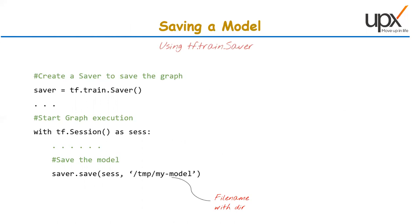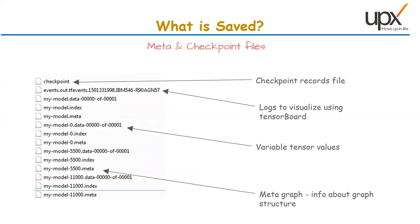We've already seen how to save a model. You create a Saver object by calling the saver method, and you save the entire graph using `saver.save` — the session information, all tensor node values, weights, biases, the Adam optimizer, what optimizer is being used, what the loss function is. All those values are stored in the saver object. Let me also discuss how a Keras model does it, but first let's understand what exactly is saved: meta and checkpoint files.